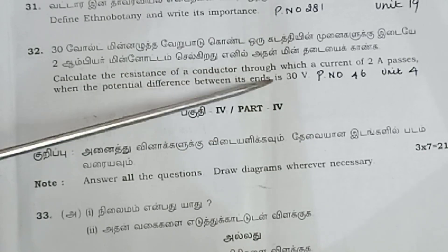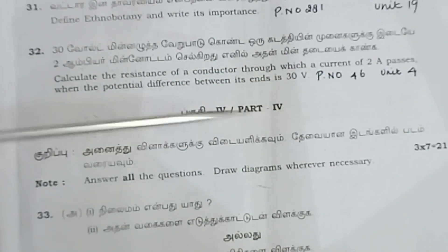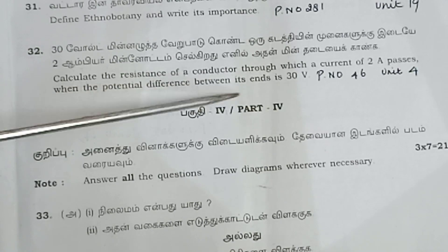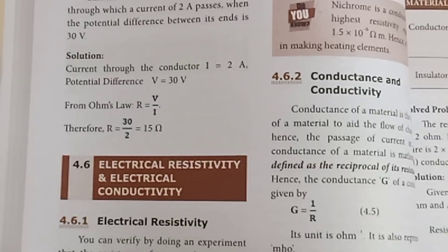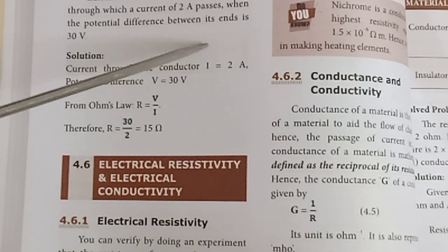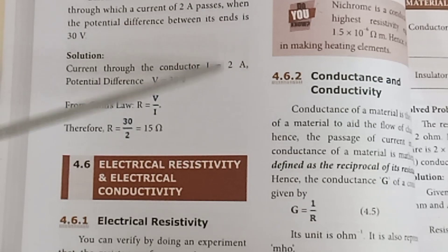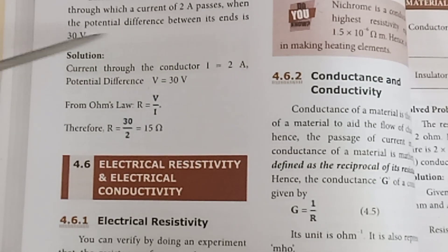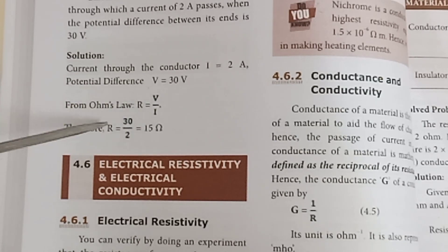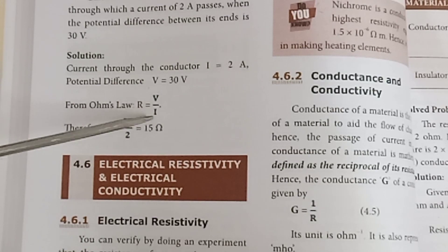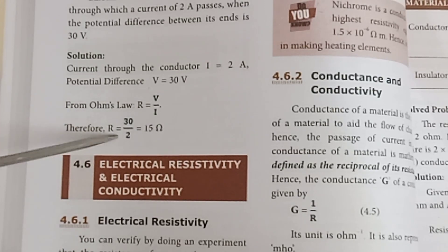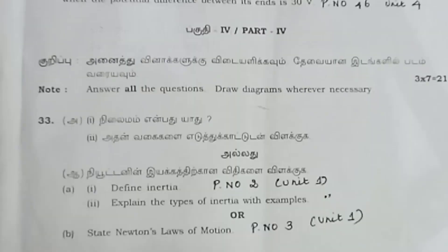Question 32 (compulsory): Calculate the resistance of a conductor through which a current of 2 ampere passes when the potential difference between its ends is 30 volts. Page number 46, Unit 4. V = 30 V, I = 2 A. R = V/I = 30/2 = 15 ohms.